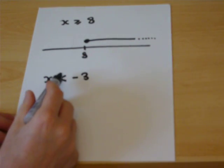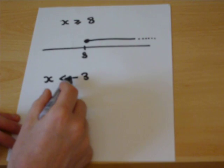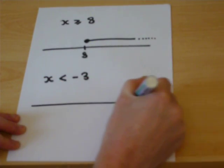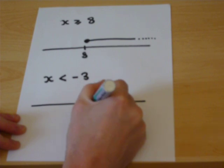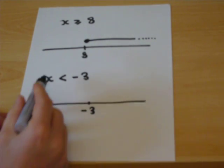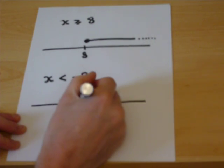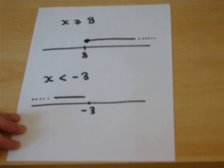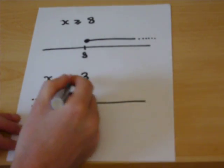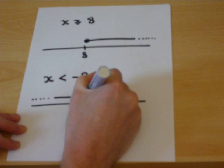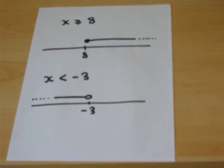A second example: x less than minus 3. On the number line, mark minus 3. Since x is less than minus 3, we draw an arrow going back to the left with an open dot at minus 3, indicating that minus 3 itself is not included.